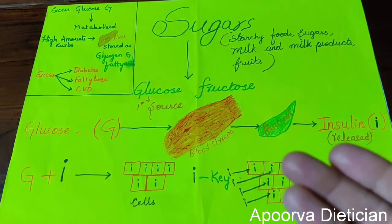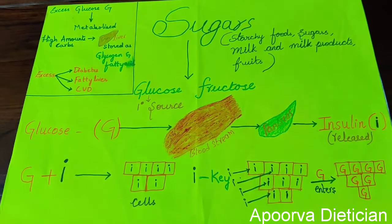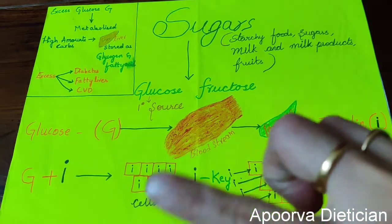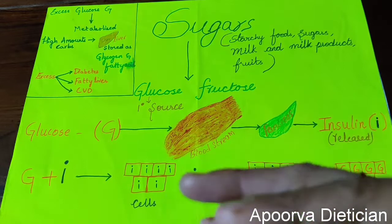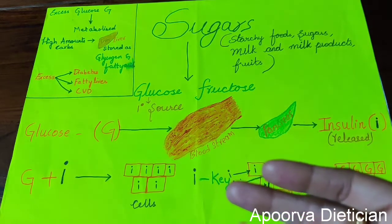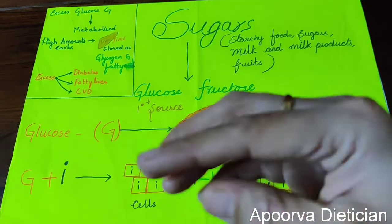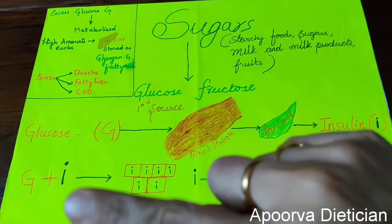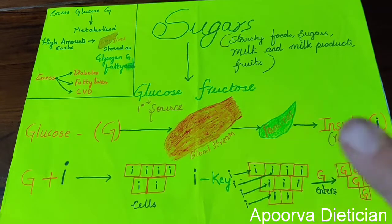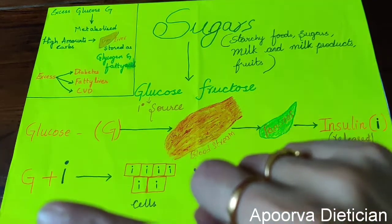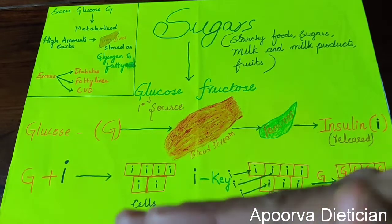Whatever function the body performs — voluntary or involuntary — it needs energy. Glucose is the primary source of energy for all body functions. Our body is made up of numerous cells, and each cell needs energy to perform various functions. However, glucose cannot enter the cell directly; it needs insulin. Once glucose enters the bloodstream, the pancreas automatically releases insulin.